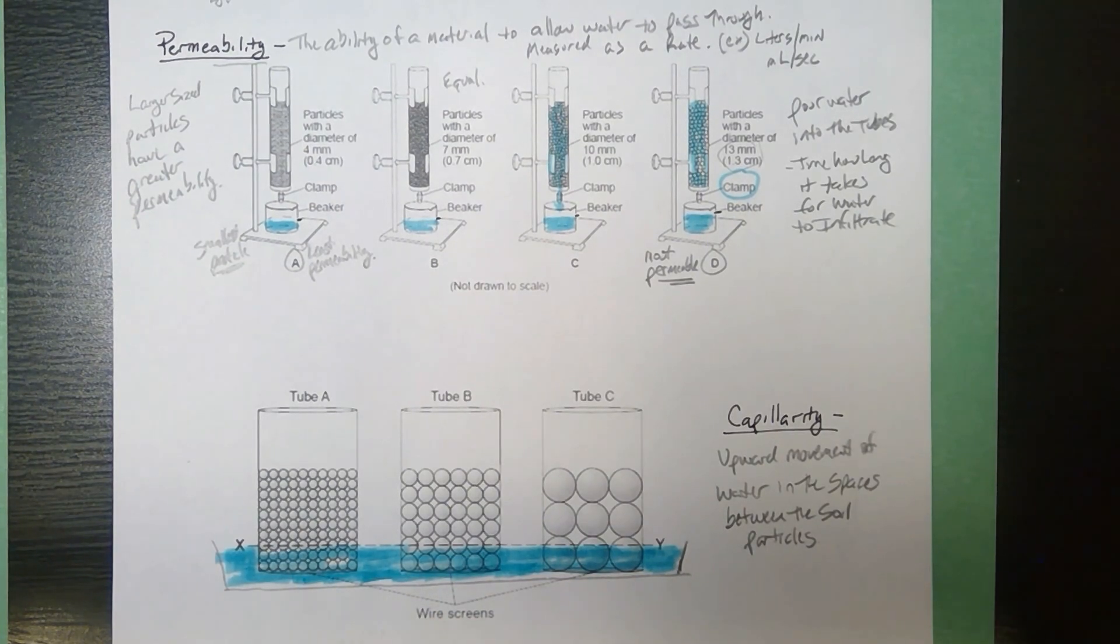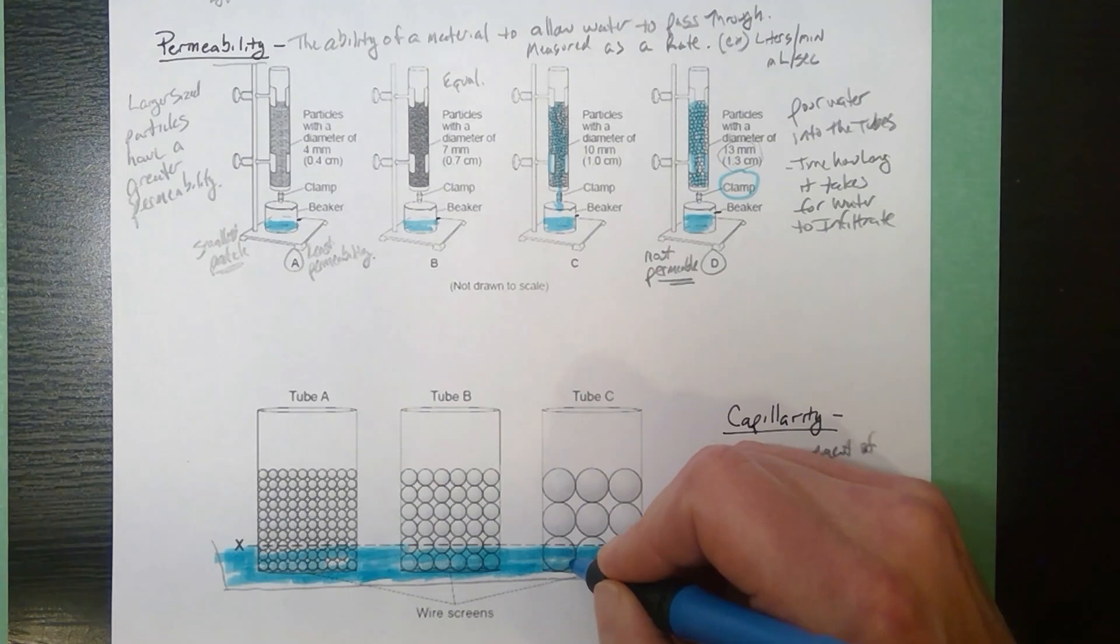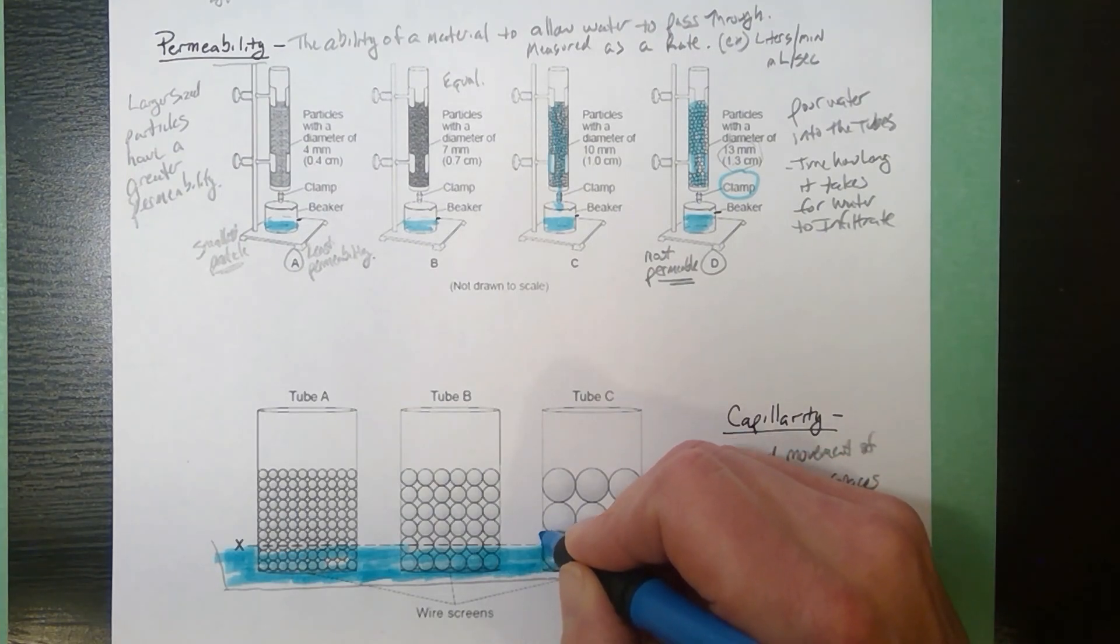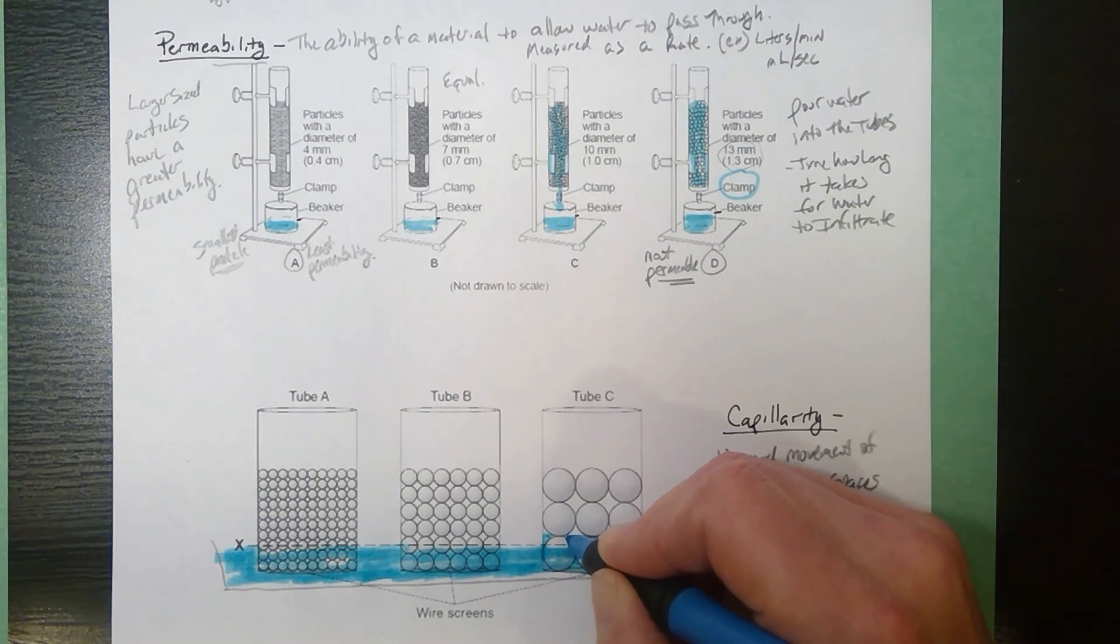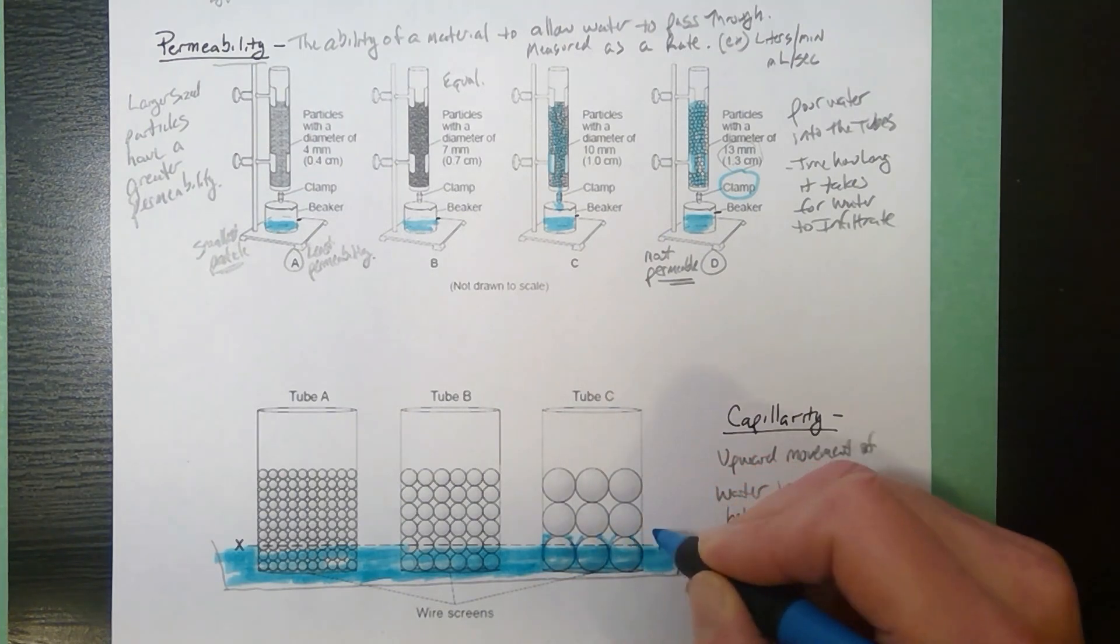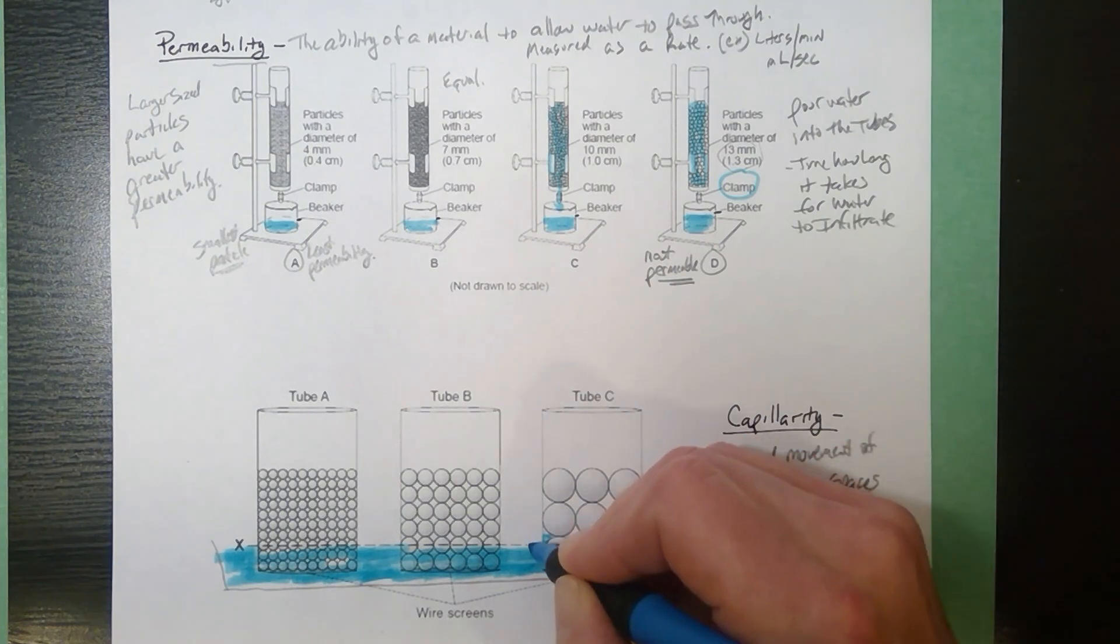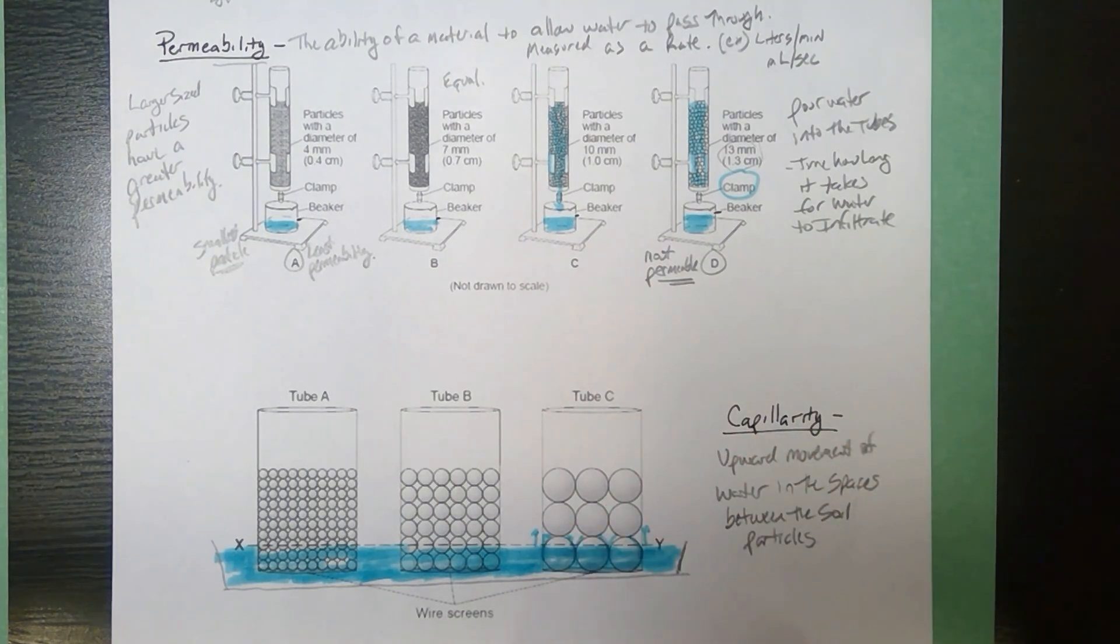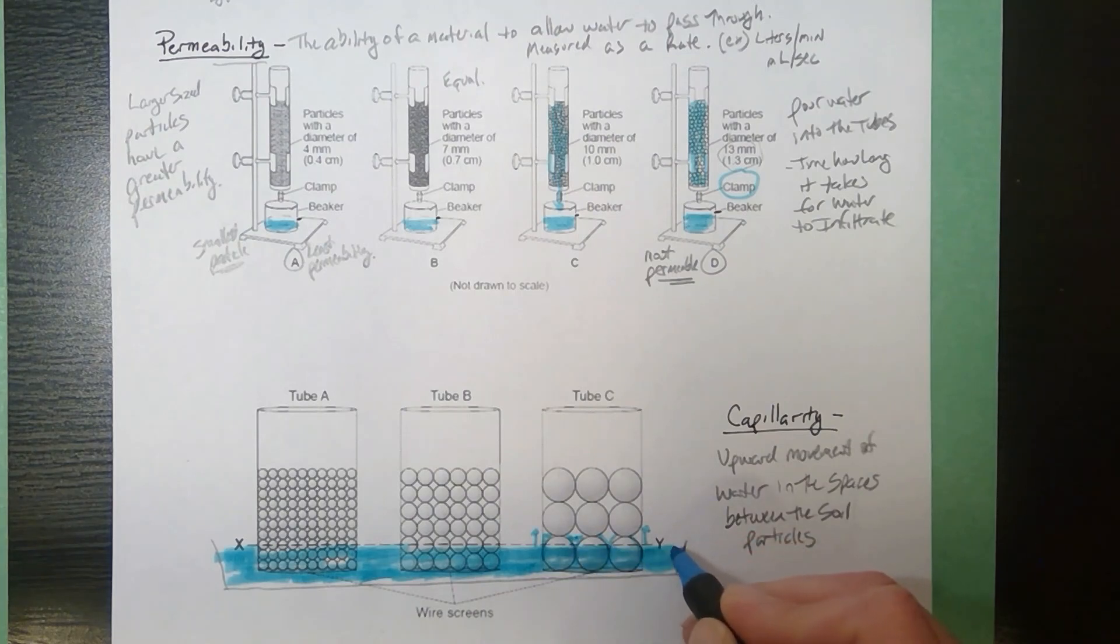But what you'd see is the water actually gets pulled upwards. A little bit of the water clings or adheres to the surface of the particles and some of the water from there gets drawn up in between the soil particles. So you'll see even though the water outside is at this level, we're getting this upward migration of water. Sometimes they'll even call that a capillary fringe.